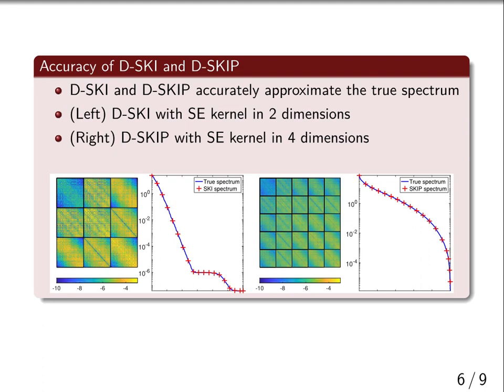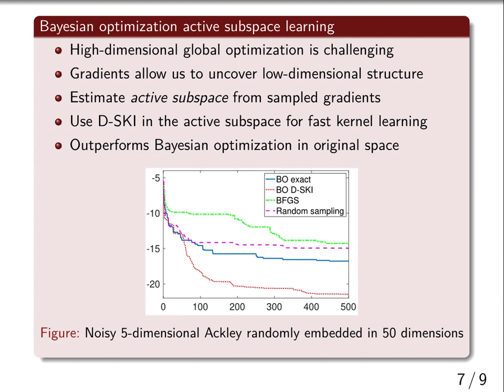We consider several applications. A key application of our approach is Bayesian optimization with active subspace learning. The general idea is that gradient information can be used to reveal low-dimensional structure, making it possible to do kernel learning and optimization of the acquisition function in this low-dimensional space. In the example below, we use SKI and significantly outperformed traditional Bayesian optimization and other gradient-based methods.